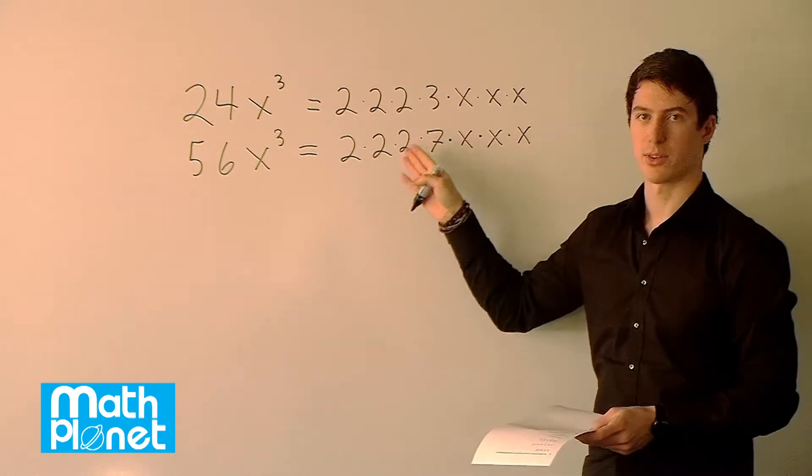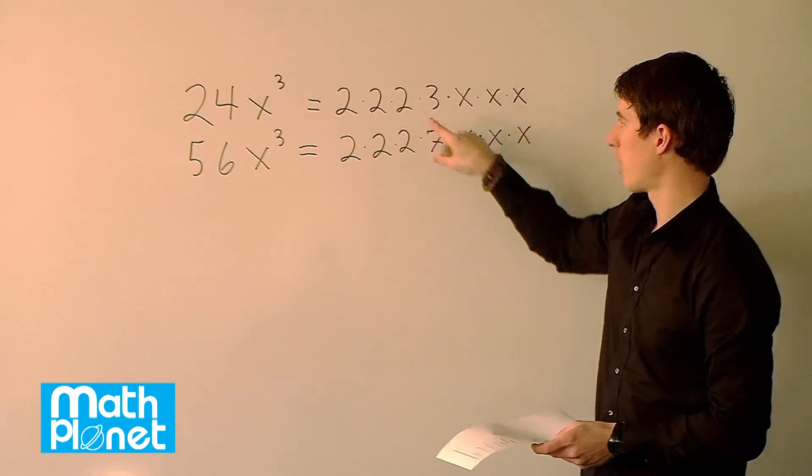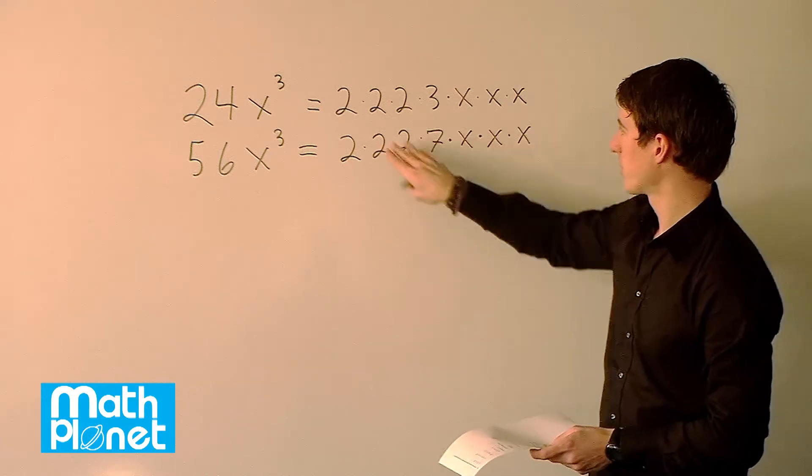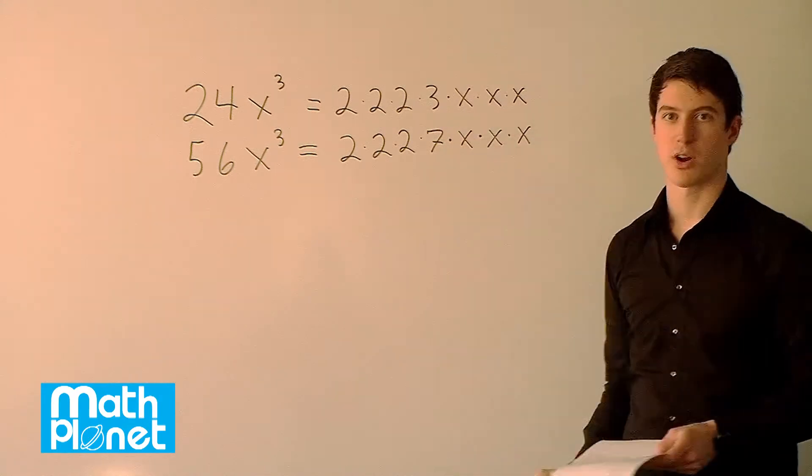So now we want to compare these. We've written this out in as expanded form as we can. We want to see what terms are common and which ones aren't. So obviously we can see these are exactly the same, these twos and these x's are exactly the same. The three and the seven aren't.